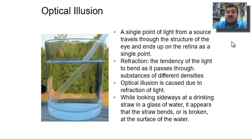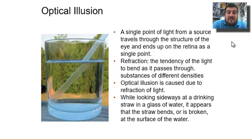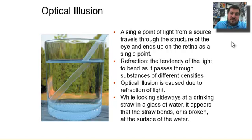Optical illusions are basically light playing tricks on you. A single point of light from a source travels through the structure of the eye and ends up on the retina as a single point. For example, a straw appears bent in water due to the refraction of light. We'll also do an optical illusion activity in class.